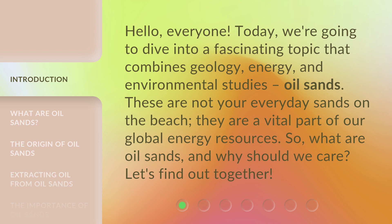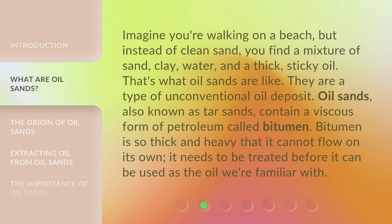Imagine you're walking on a beach, but instead of clean sand you find a mixture of sand, clay, water, and a thick sticky oil — that's what oil sands are like. They are a type of unconventional oil deposit. Oil sands, also known as tar sands, contain a viscous form of petroleum called bitumen. Bitumen is so thick and heavy that it cannot flow on its own; it needs to be treated before it can be used as the oil we're familiar with.